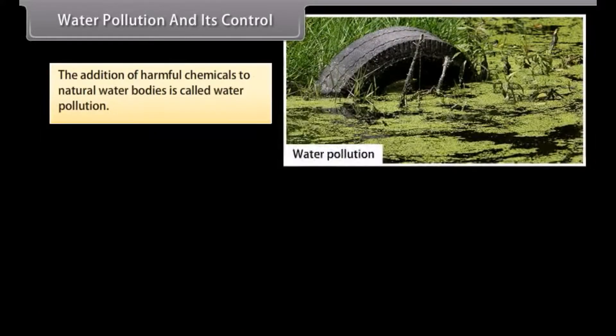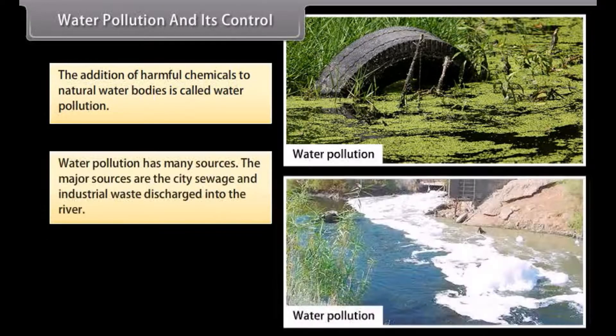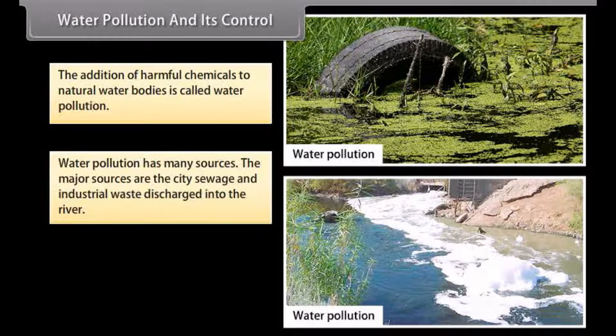The addition of harmful chemicals to natural water bodies is called water pollution. Water pollution has many sources. The major sources are city sewage and industrial waste discharged into rivers.